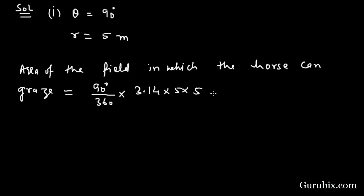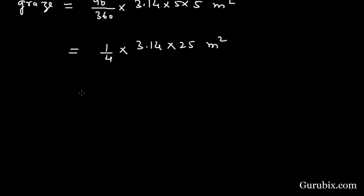Then it will be 5 times 5 meter square. This equals 1 over 4 times 3.14 times 25 meter square, and this equals 3.14 times 25 over 4 meter square.